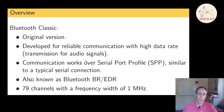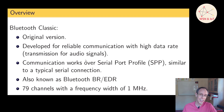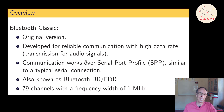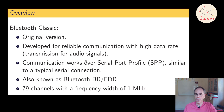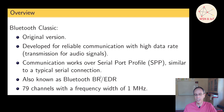Bluetooth Classic was first developed for reliable communication with high data rate. In earlier times, when we had a mobile phone and wanted to exchange data, we used infrared. There was a need for a new standard, and that was Bluetooth — for high data rate, mostly like serial communication. The communication works via a module called Serial Port Profile. It has 79 channels with a frequency width of one megahertz.